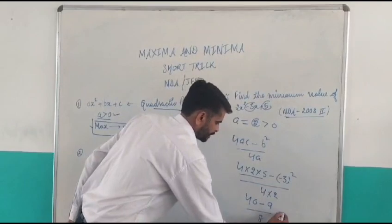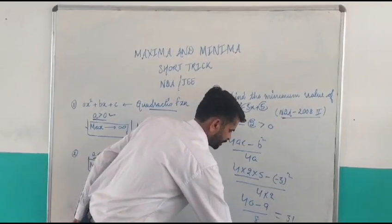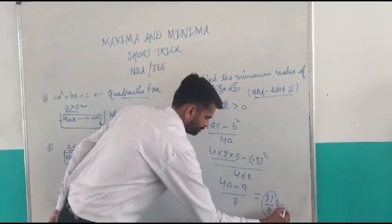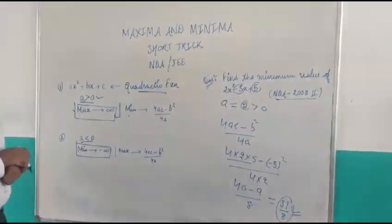Then, 40 minus 9 divided by 8. So, this is 31 upon 8. So, this is our final answer. This is the minimum value.